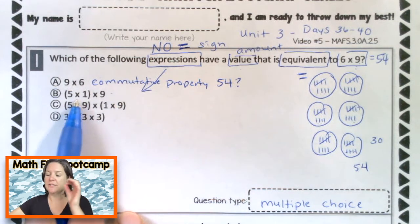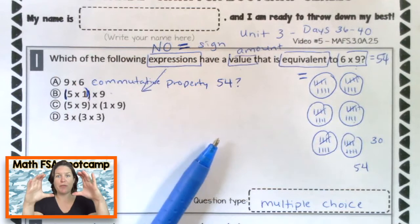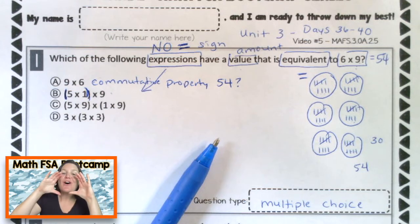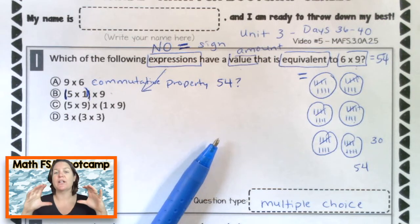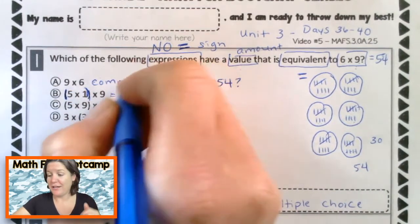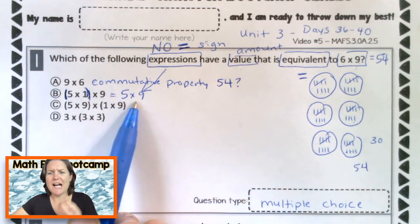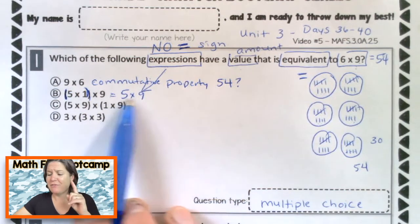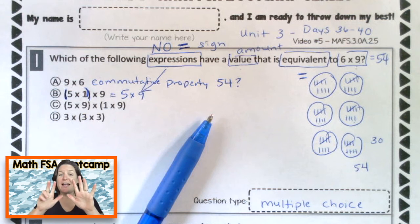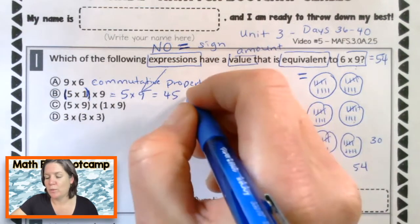Here we have five times one times nine, and these are called parentheses — parentheses say, hey, solve me first. So five times one equals five — anything times one is itself. So this would be five times nine. Five times nine is not equivalent to six times nine. Five times nine is 45, which kind of has the same numbers as 54 but in a different order — it's not equal. So what can we do with choice B? Eliminate.